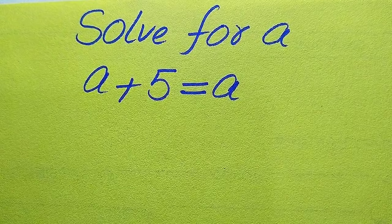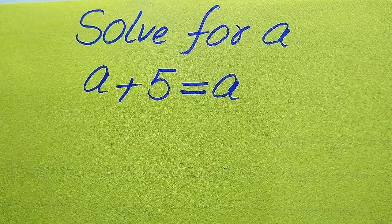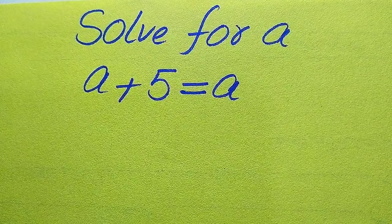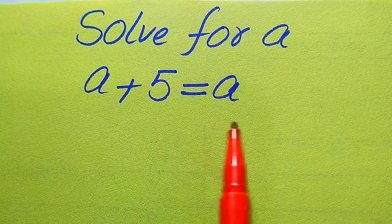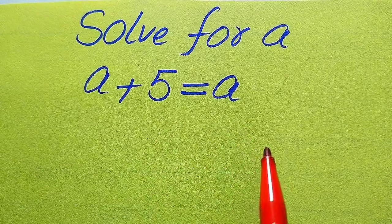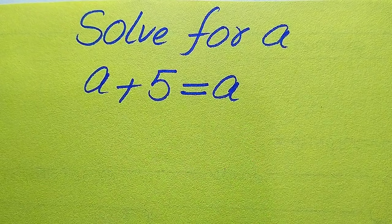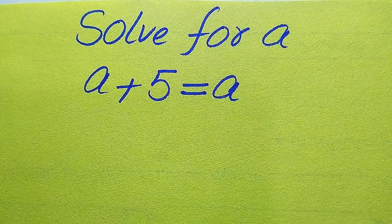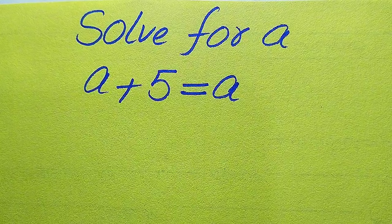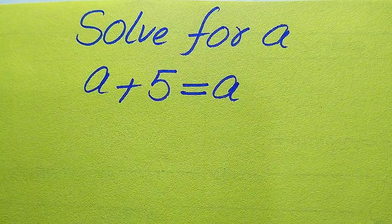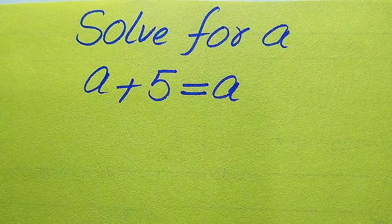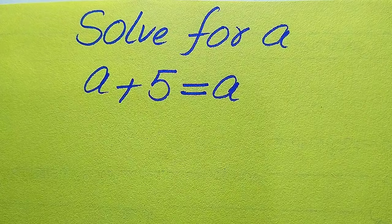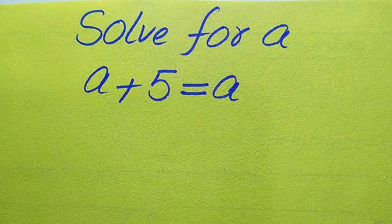Hello everyone. How to solve this problem: find the values of a if √(a + 5) = a. We solve this problem for all values of a. First, we need to find all the roots of this equation, and at the end we will verify whether both values are solutions or extraneous roots.